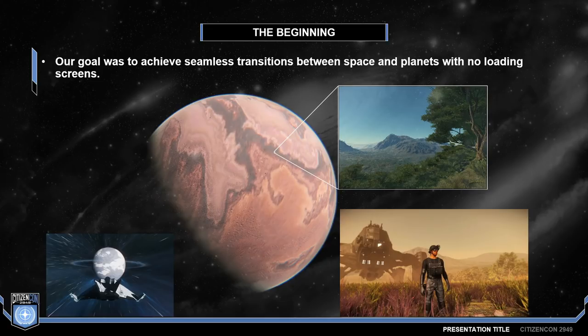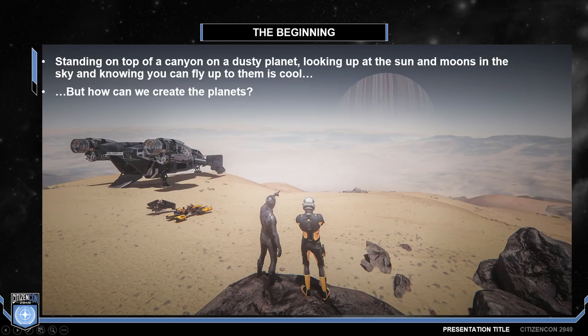Initially, our goal was to achieve a seamless transition between space and planets. So we'll fly to a distant planet, land on it, and explore its entire surface with no loading screens. So looking up at the planets in the sky and flying up to them is cool, but what are the planets supposed to look like and how can we create them?